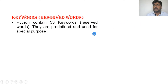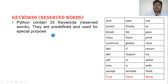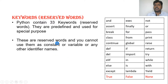Let us see what these 33 keywords are. You can see here on the right side: and, exit, not, assert, final, or, break, for, pass, and so on — like this we have 33 keywords. These reserved words cannot be used as a constant, variable, or any identifier name.